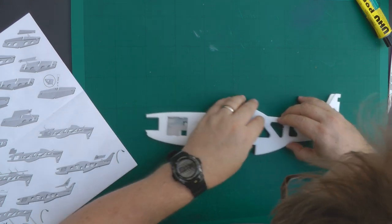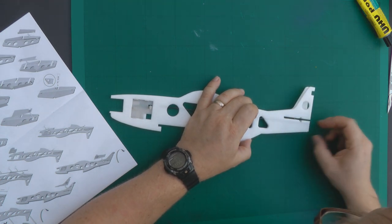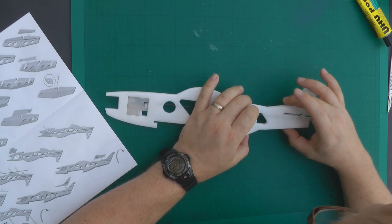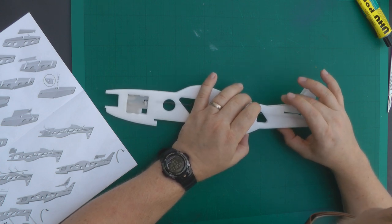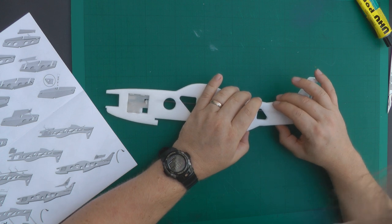As we move towards the back, it's very important that we get the gap where the horizontal stabilizer goes through as accurate as possible, so that when the stabilizer is in there it lies nice and flat.